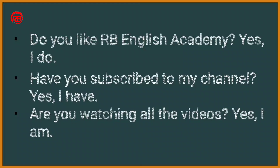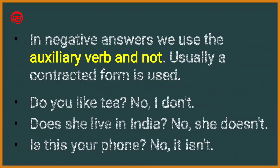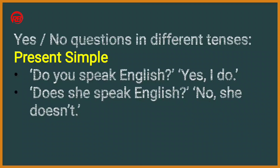In negative answers we use the auxiliary verb and 'not' — usually a contracted form is used. For example: 'Do you like tea?' — No, I do not. 'Does she live in India?' — No, she doesn't. 'Is this your phone?' — No, it is not. If these were positive: Yes, I do / Yes, she does / Yes, it is. For negative form, we add 'not' to the auxiliary verb.